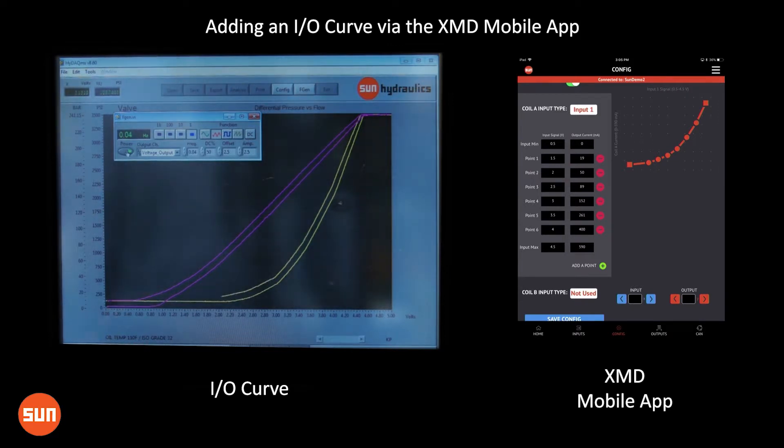Now this is more of an exponential curve. When we run the hysteresis curve here, you can see that it's very similar to the curve that we're drawing.